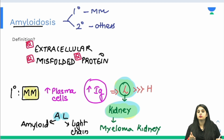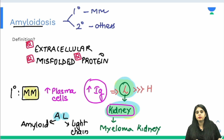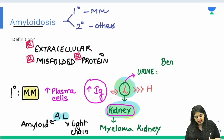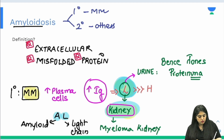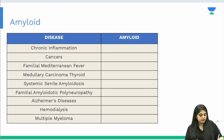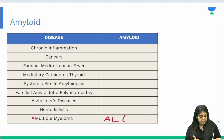When those same light chains deposit in the kidney, it's called myeloma kidney — AL type of amyloid. When those light chains pass out into the urine, that is the famous condition called Bence Jones proteinuria. So in multiple myeloma, the type of amyloid is AL, where A stands for amyloid and L stands for light chain.